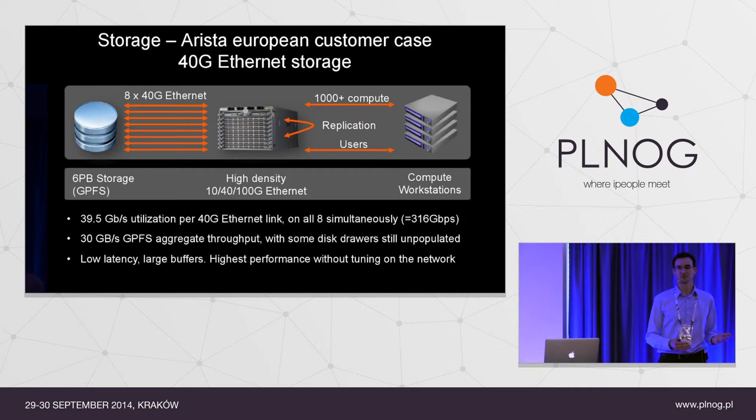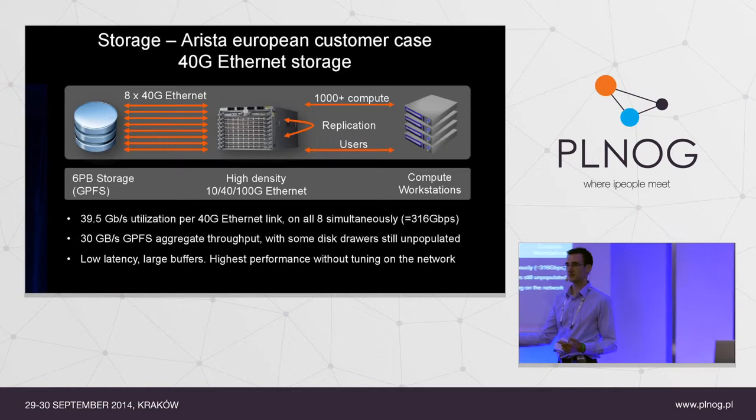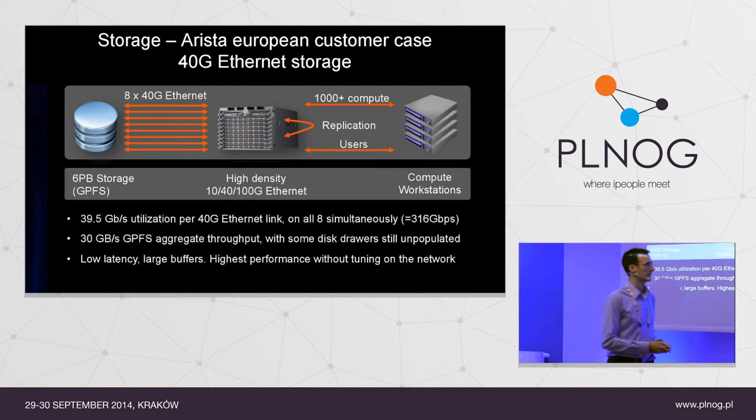The NICs, the PCI bus, the CPU — all of that is performing at very high levels, and the bottleneck today in the data center is more likely to be the network.